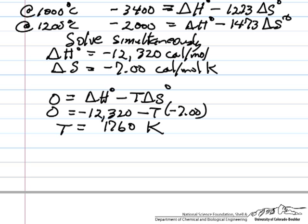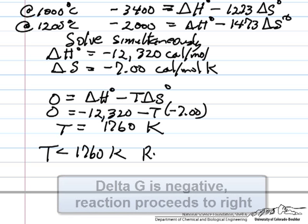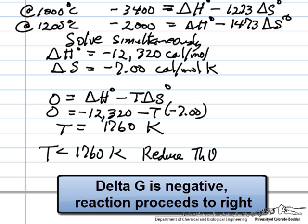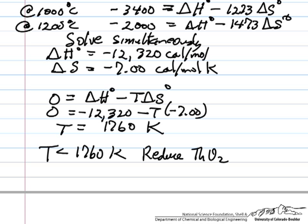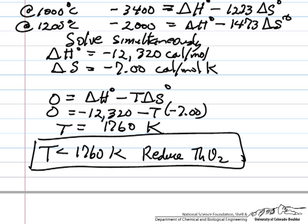So what this means is that at temperatures below this, the reaction will be in the forward direction and will reduce, so for T less than 1760 Kelvin, we reduce the thorium oxide. At higher temperatures, the equilibrium constant decreases, the reaction will go to the left because the activities are one for the pure components, the reaction will proceed to the left until there is no thorium left. So to get reduction, we have to be below 1760 Kelvin.